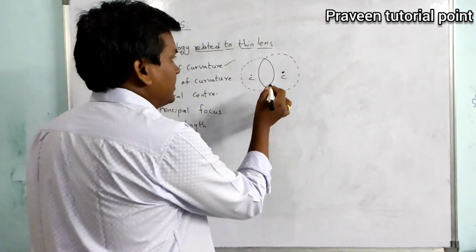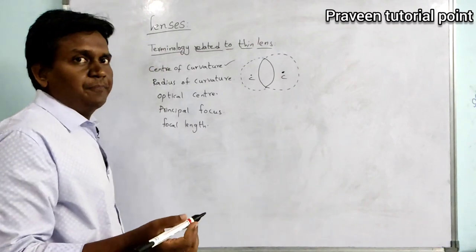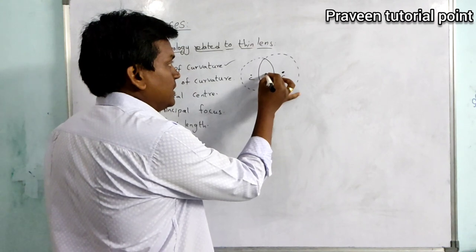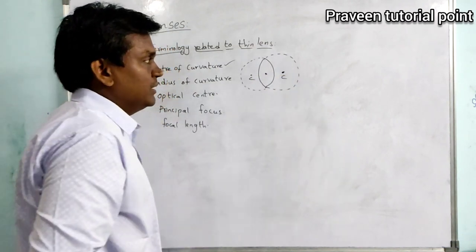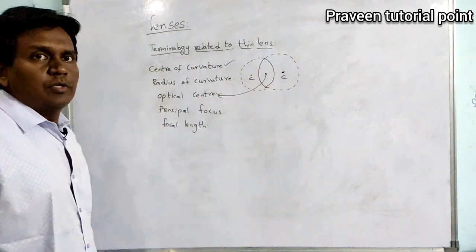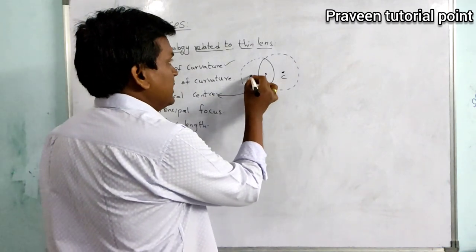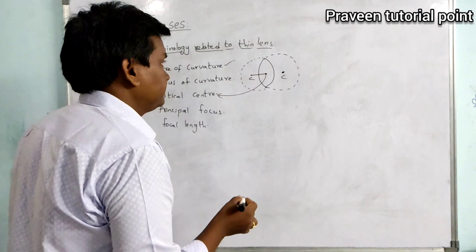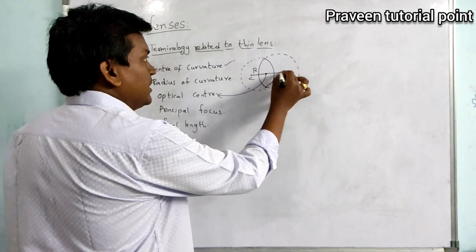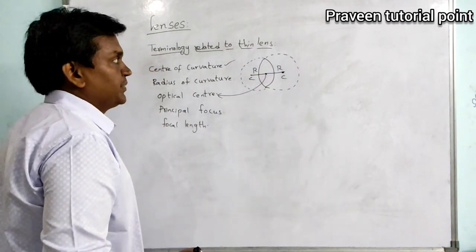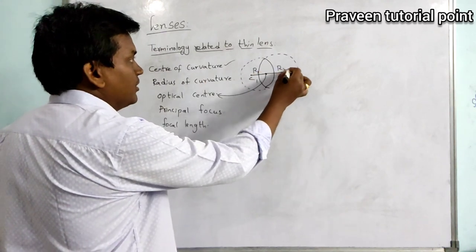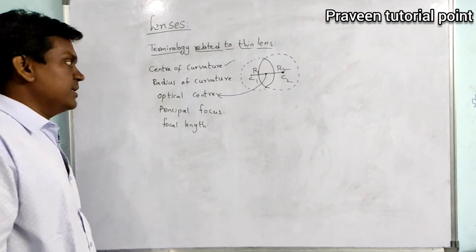Before going to radius of curvature, we need to consider the optical center. The midpoint or middle point of the lens is called the optical center. The distance between the center of curvature and the optical center is the radius of curvature. If we label the two centers of curvature as C1 and C2, then the corresponding radii are R1 and R2.